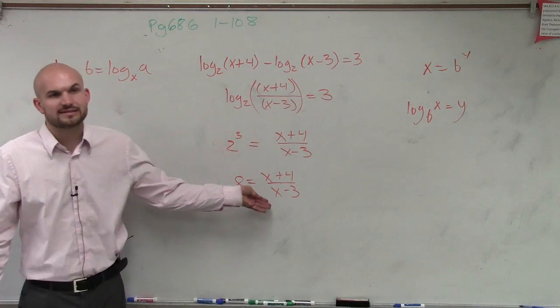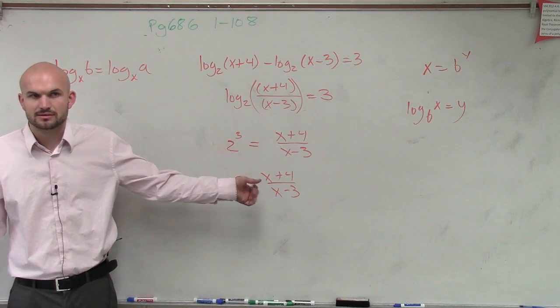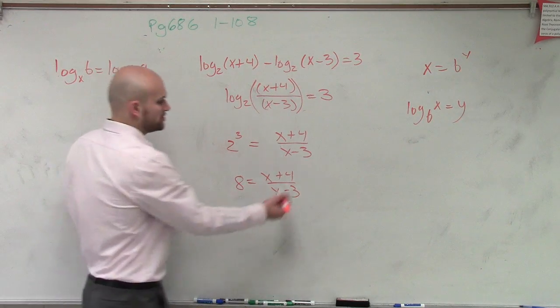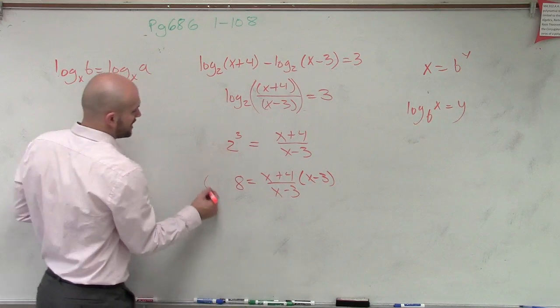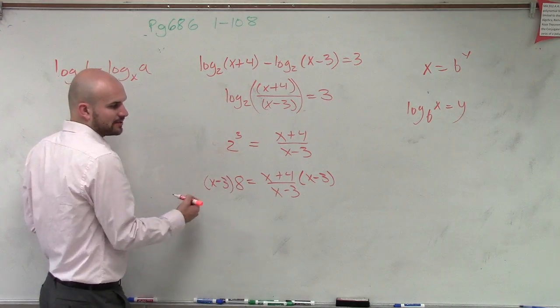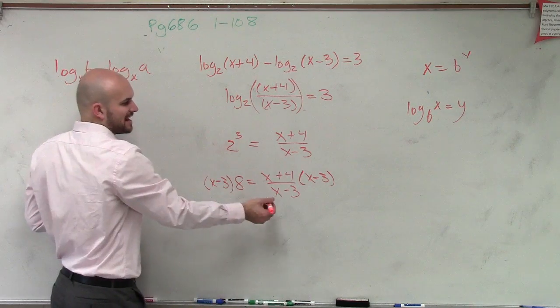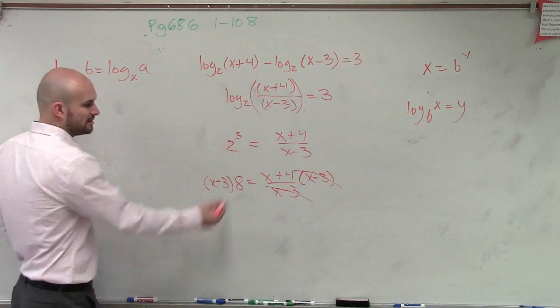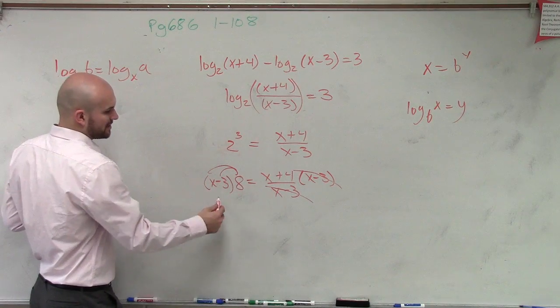So now, how do you get rid of a denominator? You can always multiply. So if we just multiply by x minus 3 on both sides, as long as I do that on both sides, my equation is still going to be equal. But now, x minus 3 divided by x minus 3, that divides to 1. Then I can apply a distributive property here.